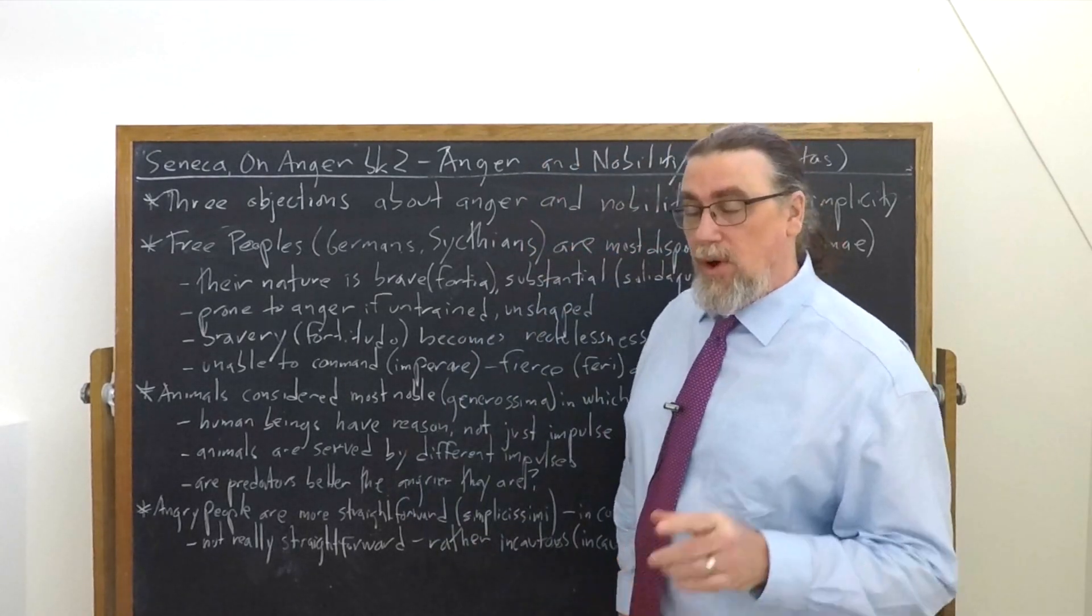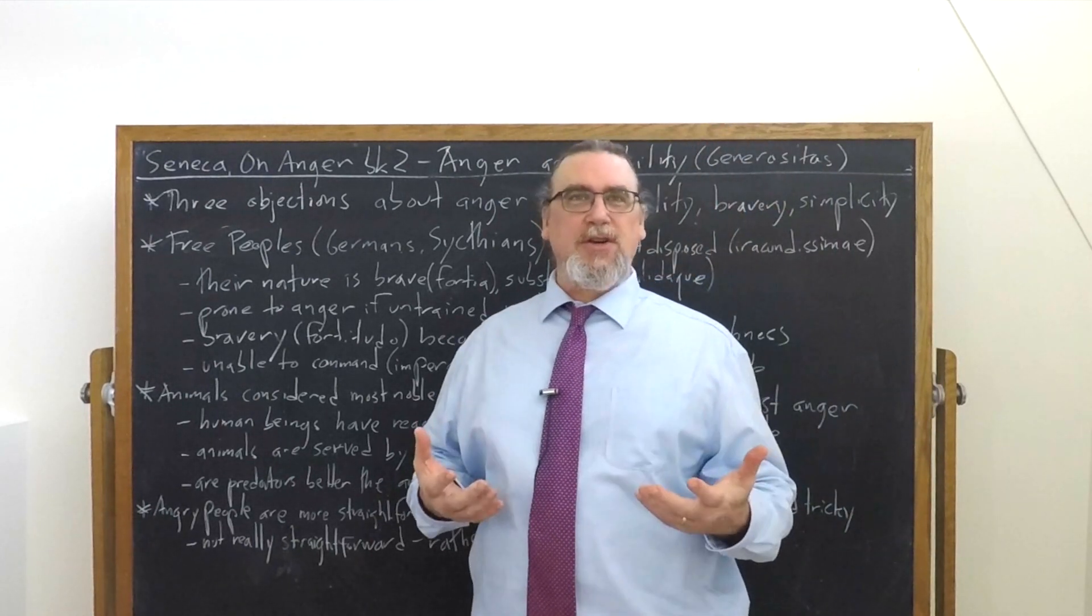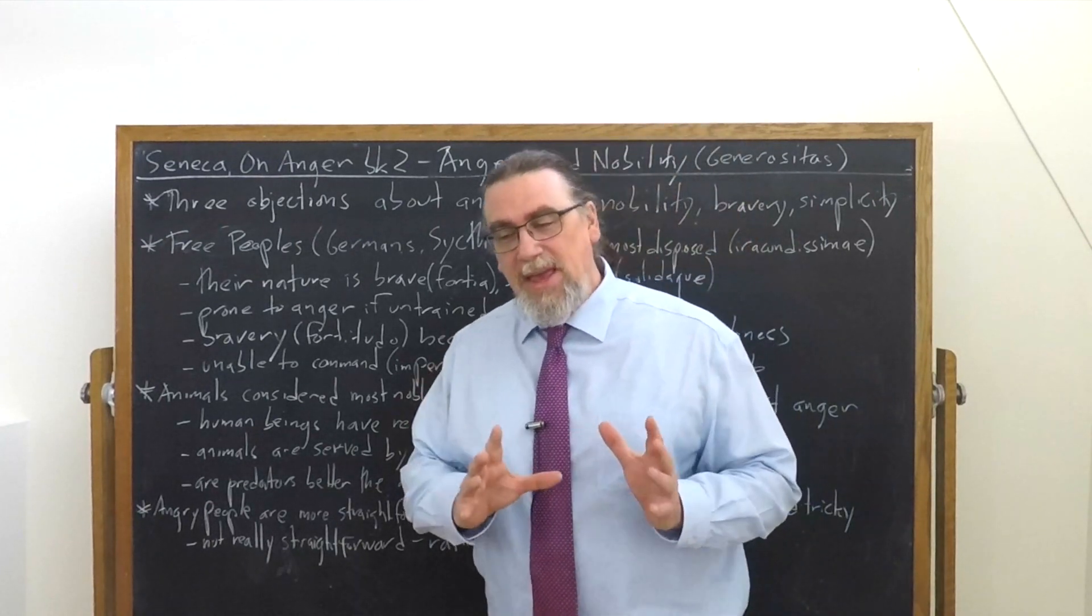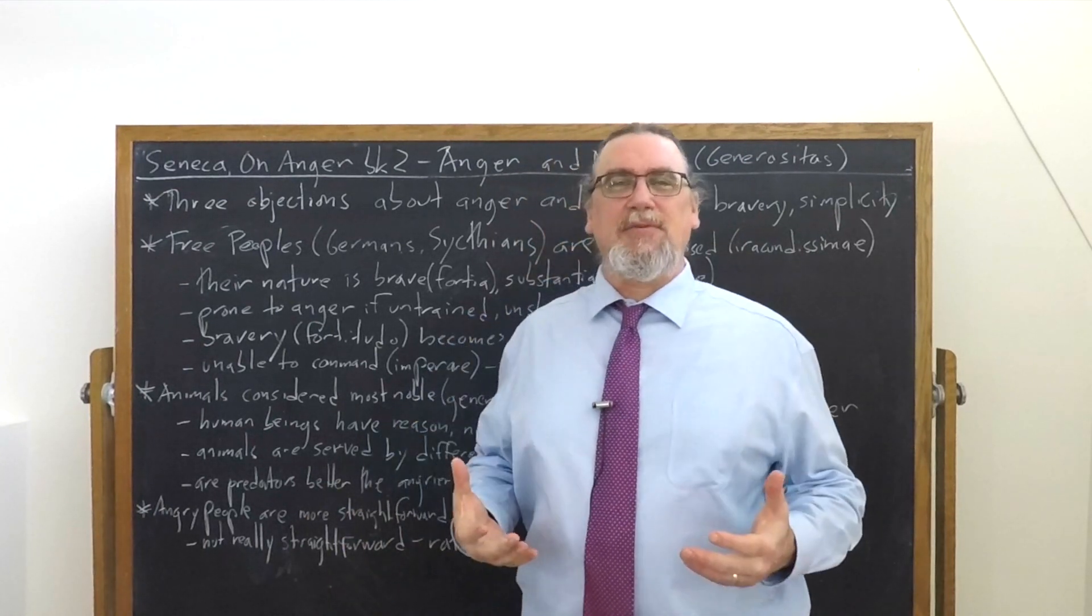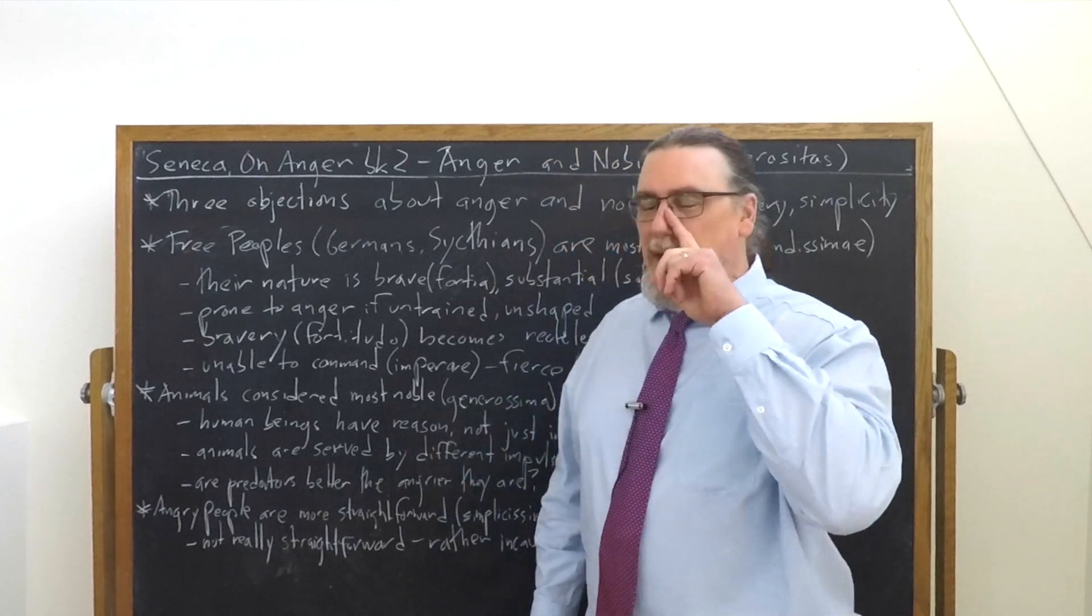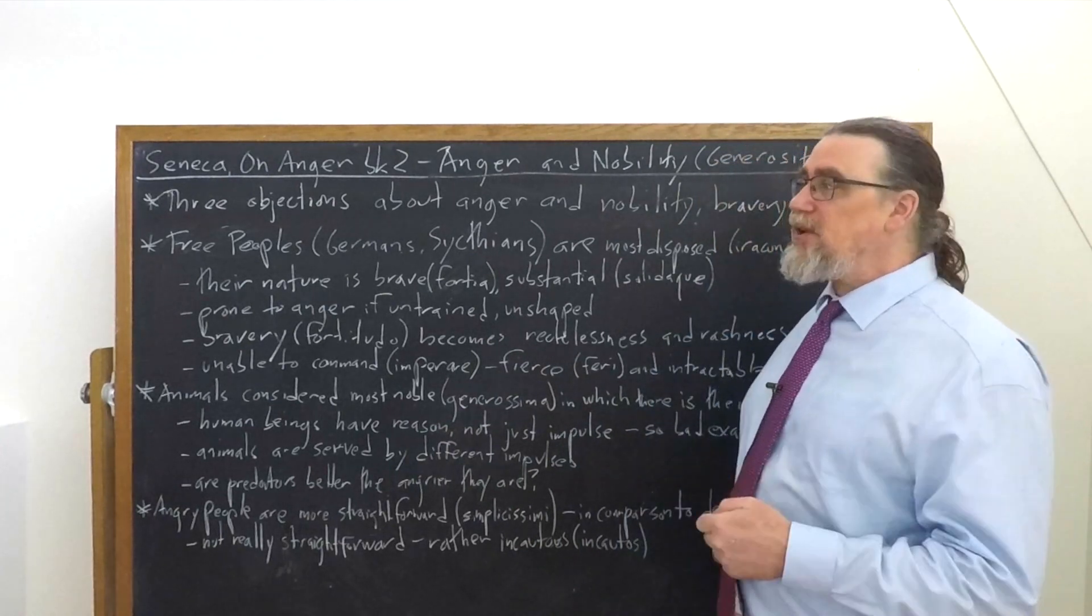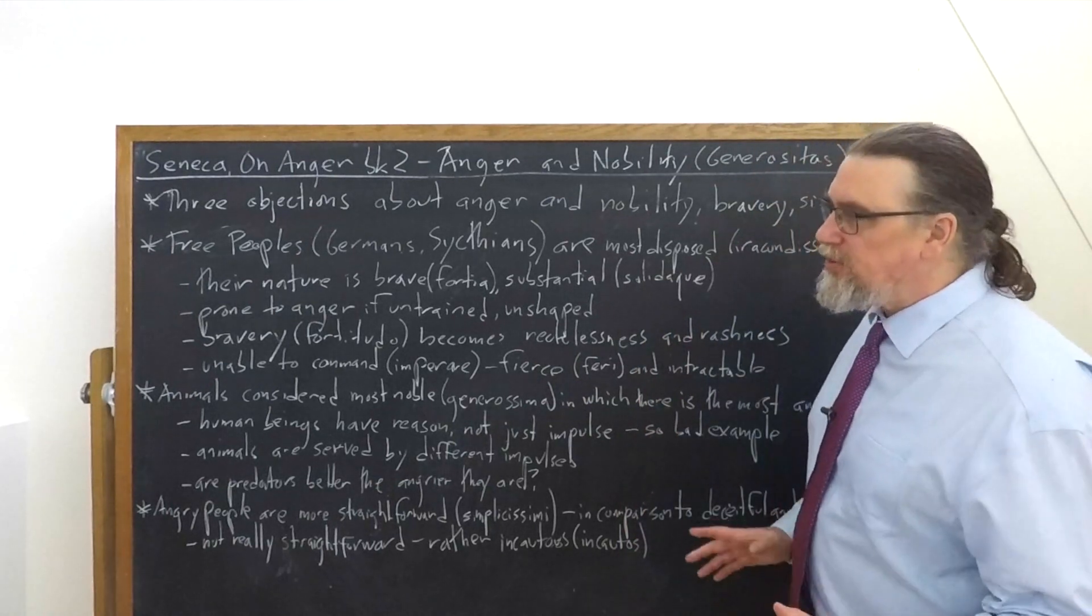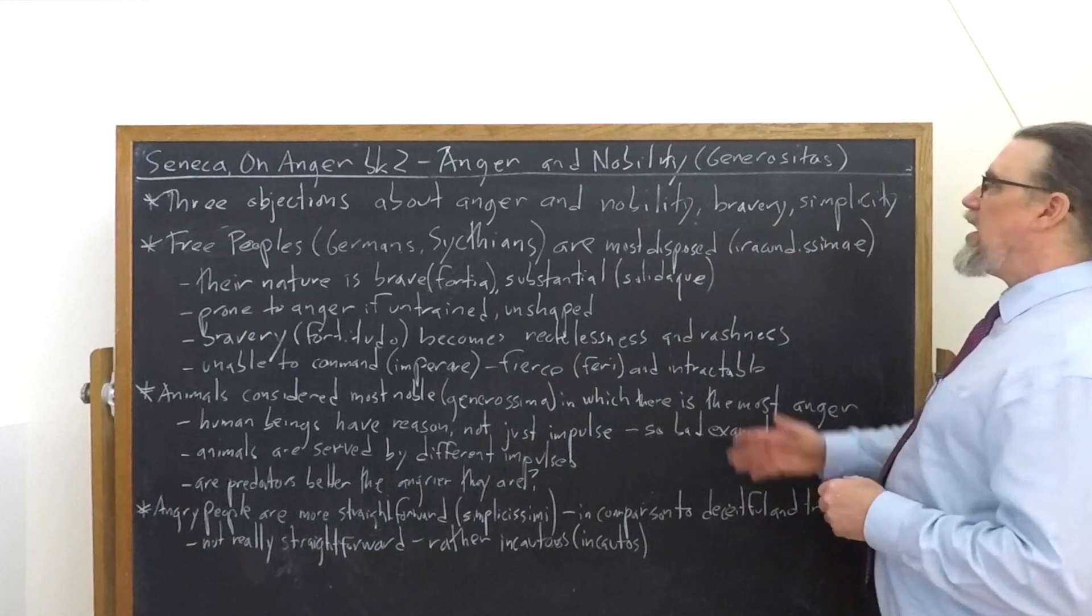In book two of his work on anger, Seneca is going to consider a number of objections that people in his own time were bringing forward, and I think that we see people even up to the present getting taken in by. These are lines of reasoning about anger that on the surface seem kind of plausible, but are actually, as Seneca is going to point out, quite mistaken. And they have to do with what we can translate as nobility. There's this term that's being used, which is not nobilitas, but generositas.